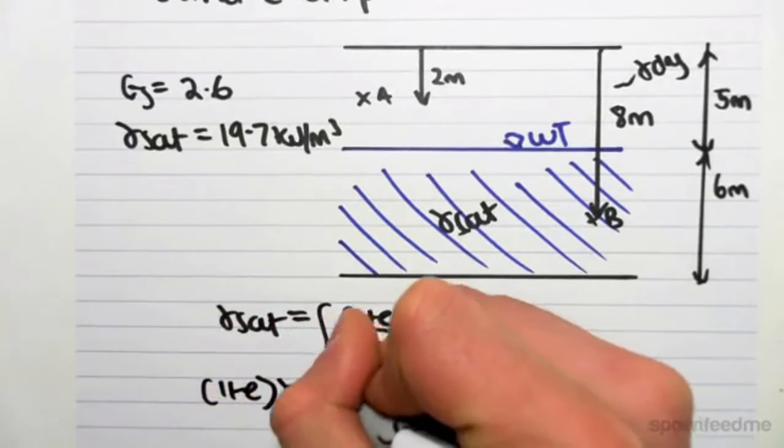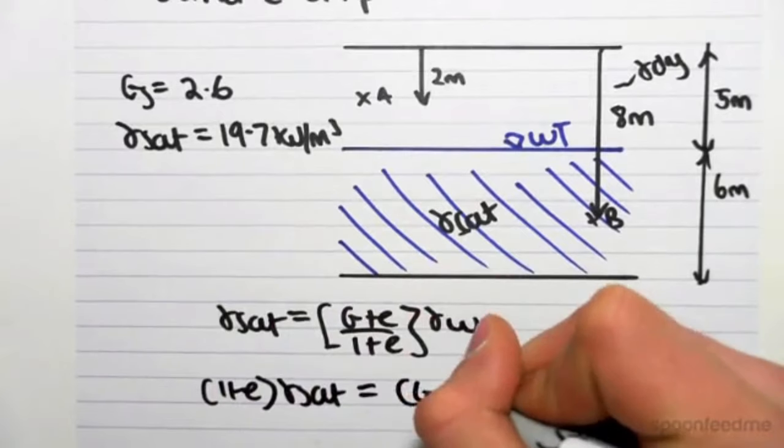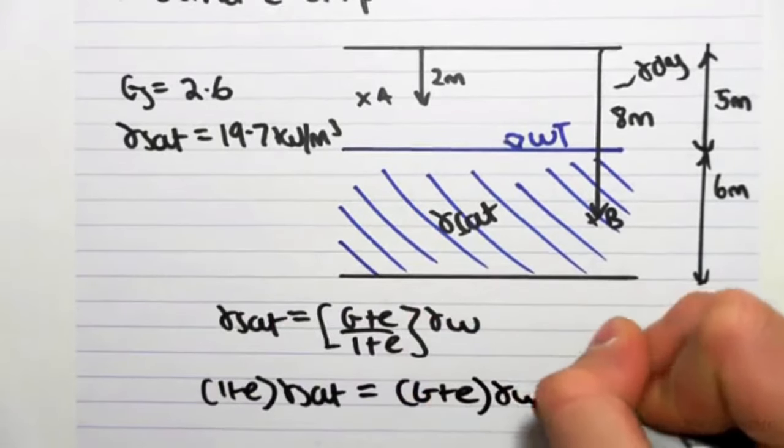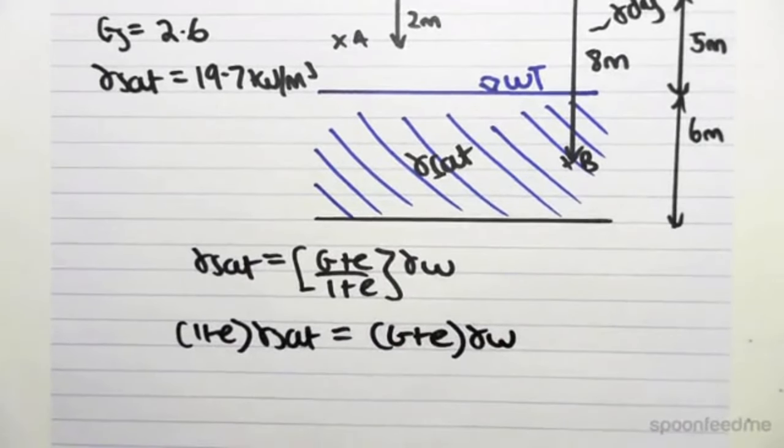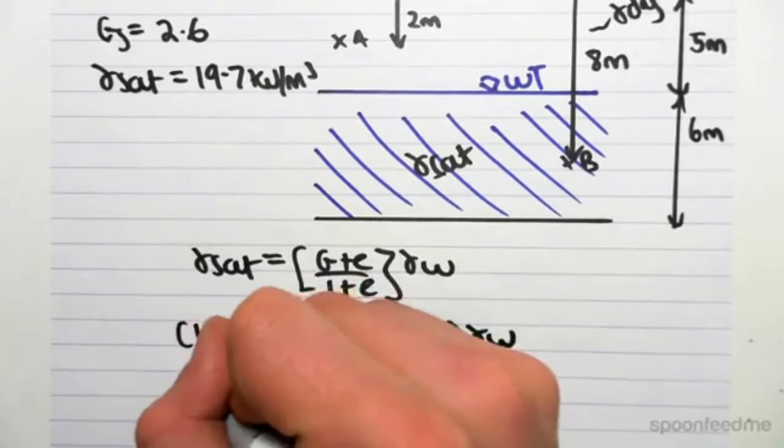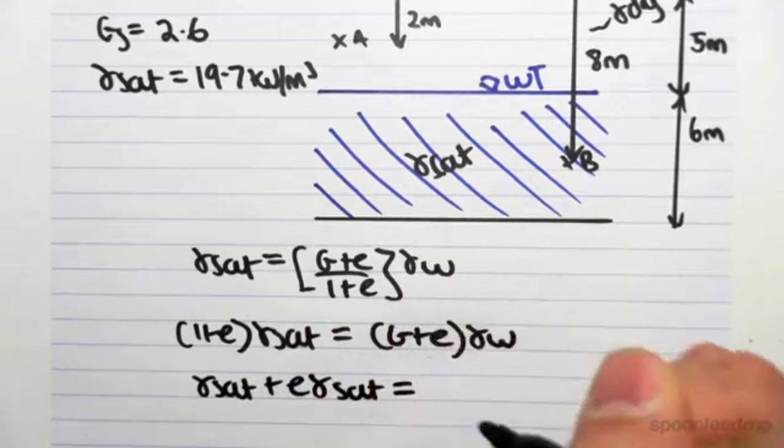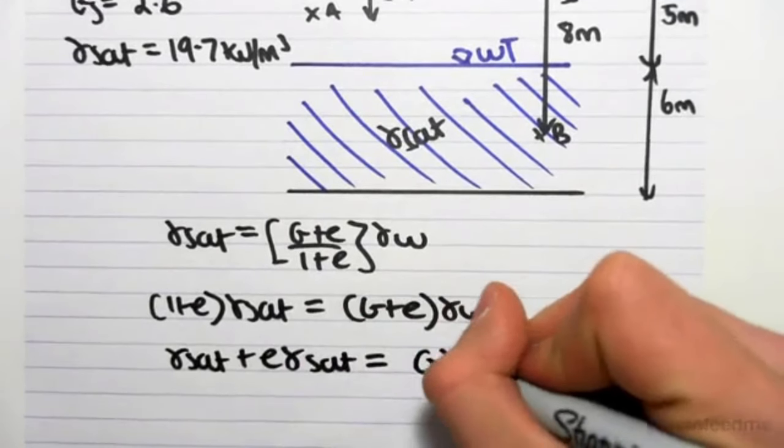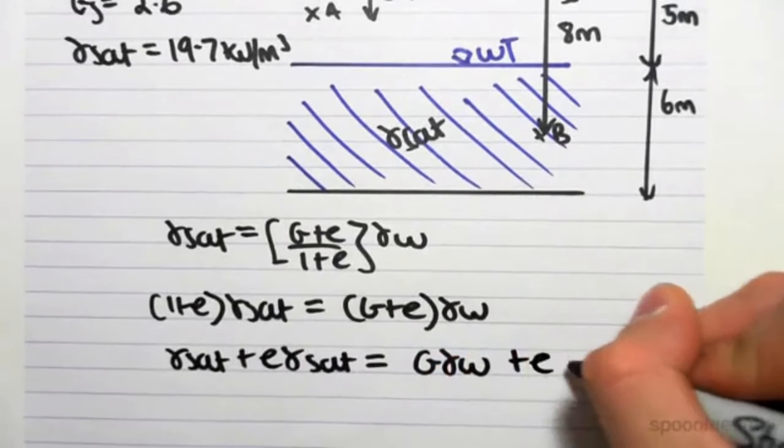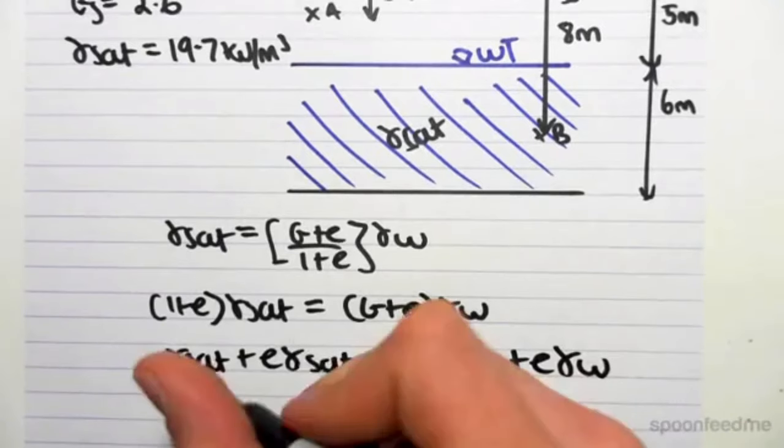If we rearrange this, we get 1 plus E gamma sat equals G plus E gamma W. We can then expand this to get gamma sat plus E gamma sat equals G gamma W plus E gamma W.